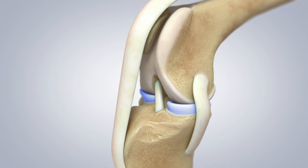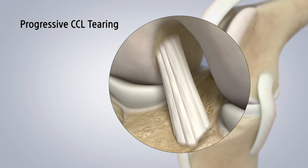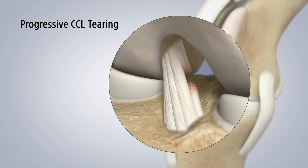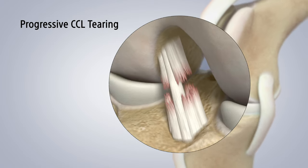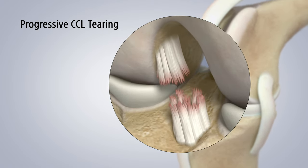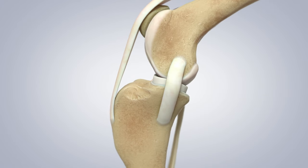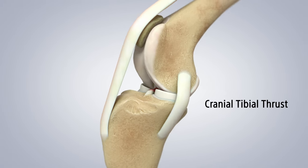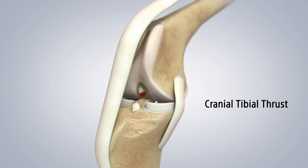In most cases, due to multiple factors likely based in genetics, the dog experiences a progressive tearing of their cranial cruciate ligament. Little by little, the microtrauma tears away at the ligament until finally the last strand of the ligament breaks and the dog's knee becomes unstable. The instability that results from the CCL tear causes what we call cranial tibial thrust, which results in additional injury to the dog's knee and arthritis formation.